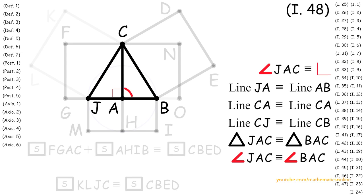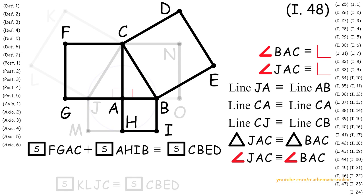Since angle JAC is congruent to a right angle, then it follows that angle BAC is also a right angle. Therefore, we have proven that with any given triangle, if the sum of the two smaller squares are congruent to the larger square, then the angle opposite the larger square must be a right angle.